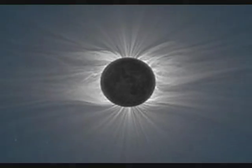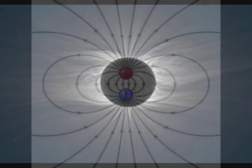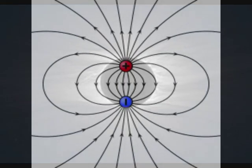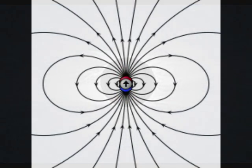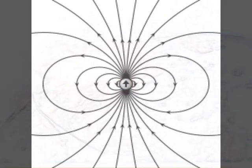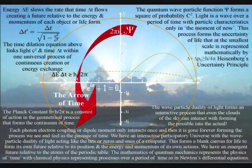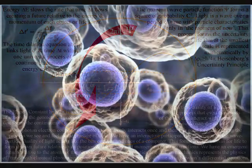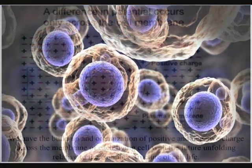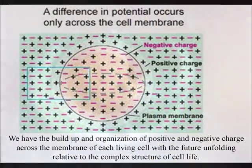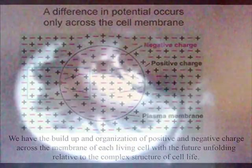This forms one of the most prominent parts of this process, with photon energy cascading down from the sun forming greater degrees of freedom for entropy or disorganization, and also greater degrees of freedom for the complexity and diversity of cell life. This can be seen with the build-up and organization of positive and negative charge being relative to the membrane of each living cell.